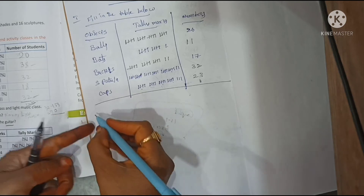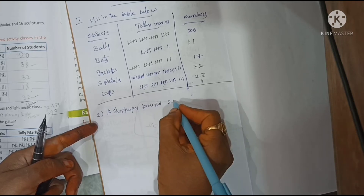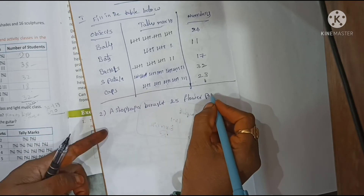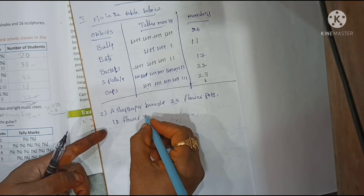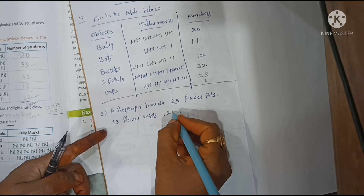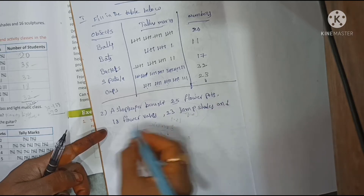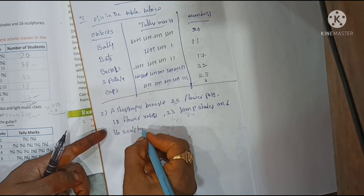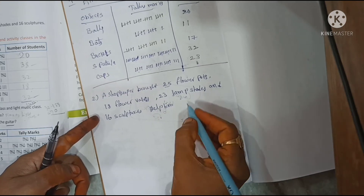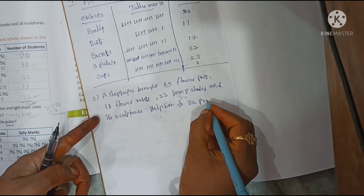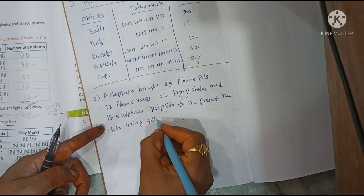Next is the second sum. A shopkeeper has: 25 flowers, 18 flower vases, 23 lamp shades, and 16 spatulas. Help him to represent the data using tally marks.